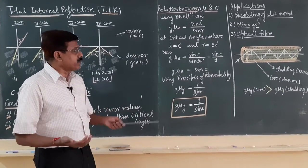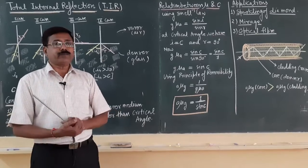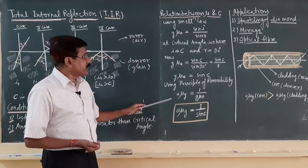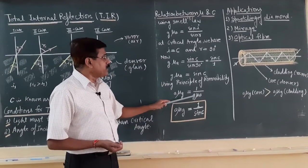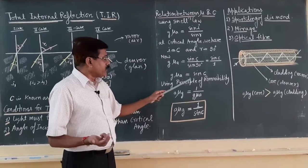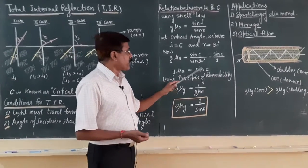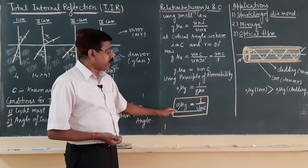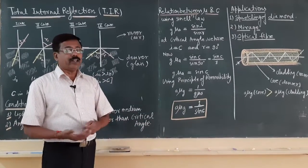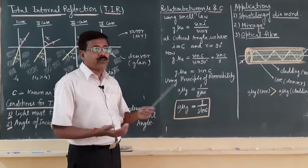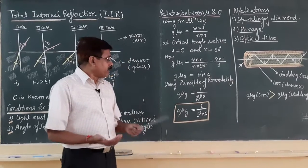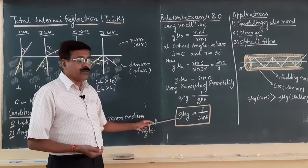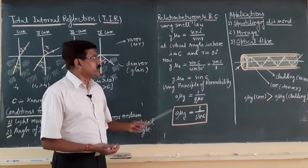If you want to know the refractive index of glass with respect to air, you use the principle of reversibility, which states that A mu G equals 1 divided by G mu A. Substituting the value of G mu A in terms of critical angle, A mu G equals 1 divided by sin c. So if you know the critical angle for a particular pair of media, you can calculate the refractive index of the denser medium with respect to the rarer medium using this formula.